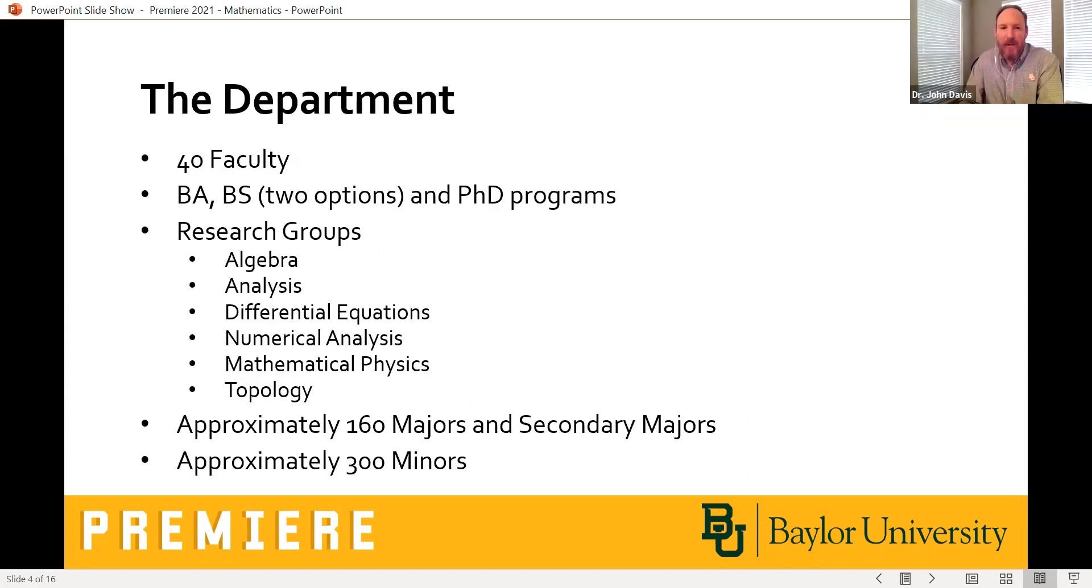Okay, so to tell you a little bit about our department, we're what you would call in the grand scheme of things sort of a medium-sized department. We have 40 faculty. We offer the two different bachelor's, a BA and a BS with two options, as well as an MS and a PhD program. We represent all the major research groups in mathematics. So basically, if there's any field of mathematics that you're interested in, we have representation in those groups. For the size of our university, we have actually a good number of math majors. We have about 160 math majors and secondary majors, which are like double majors, and approximately 300 minors. So that's a lot of math majors and minors.